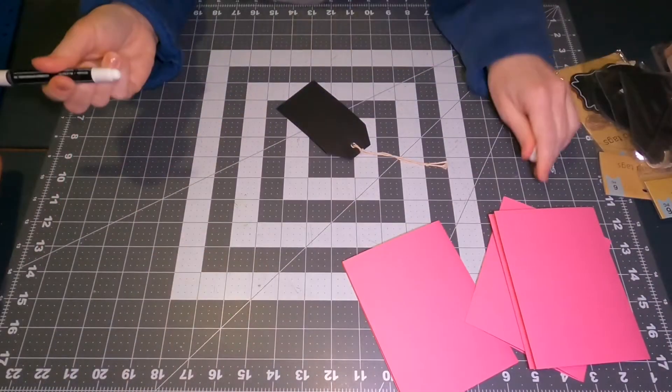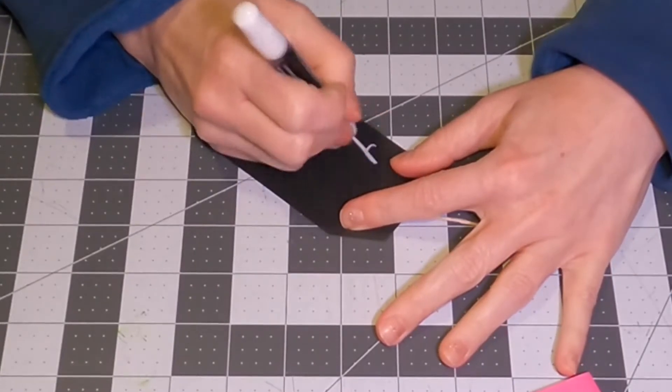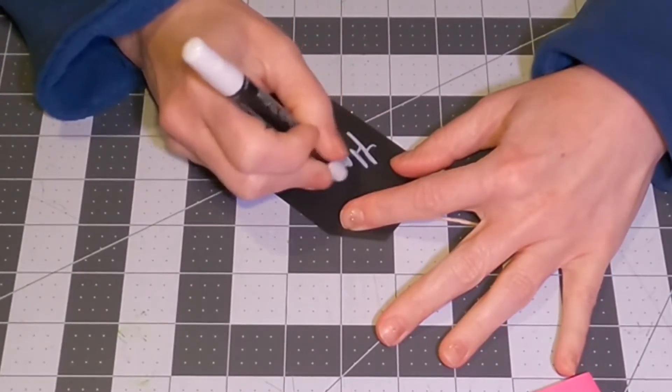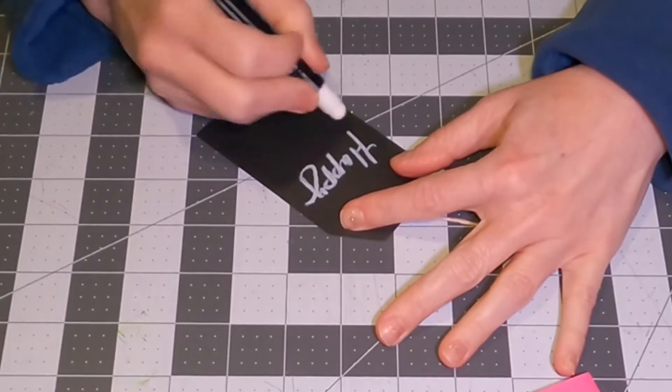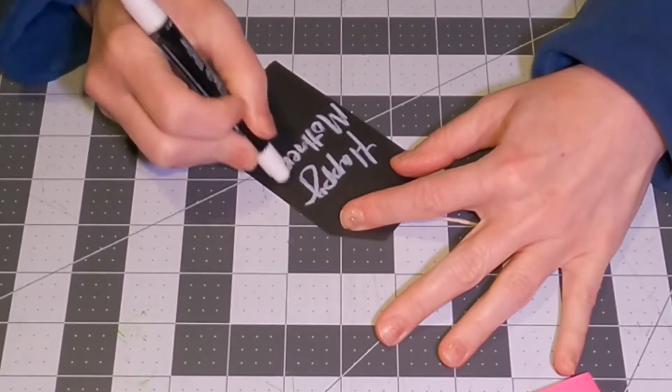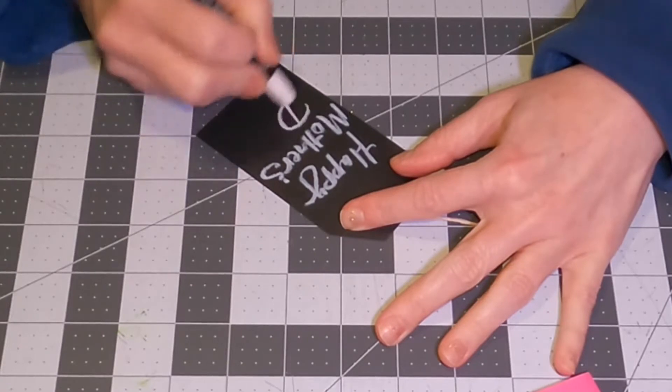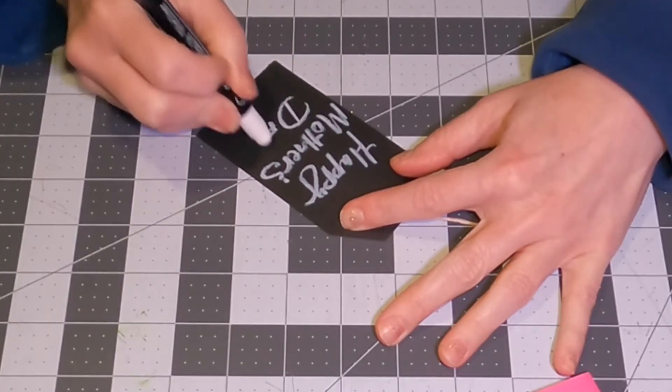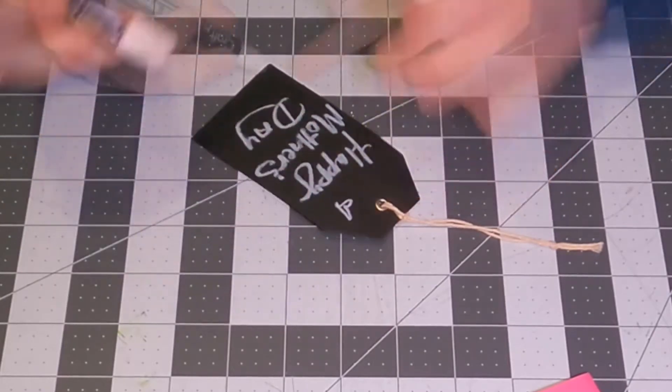So I'm using these Dollar Tree tags, chalkboard tags, and then they also have these chalk writers. So it's just chalk, but it's in these plastic pens so it's easier for writing. They are kind of fat though, so you still need the bigger tags to be able to write stuff like this.